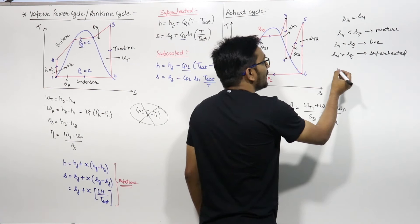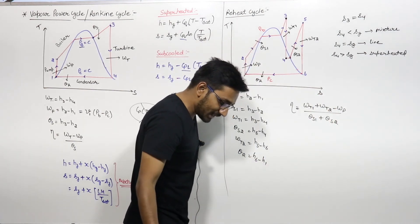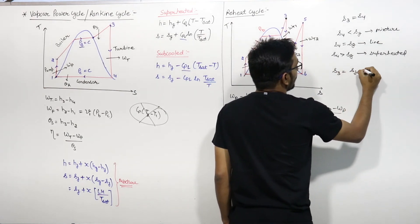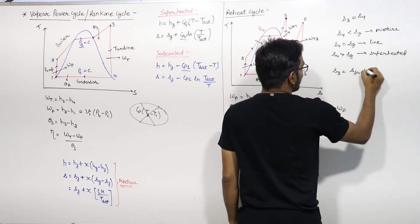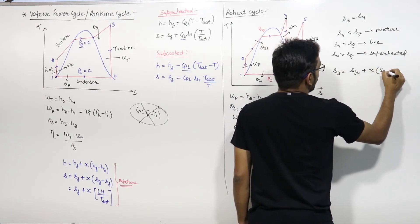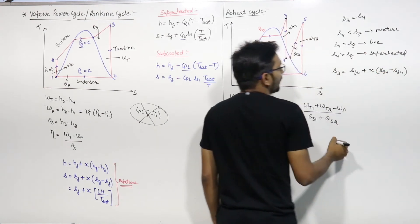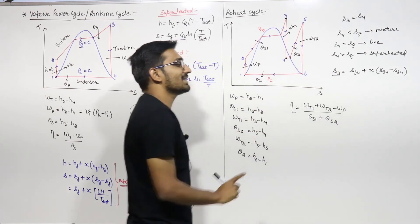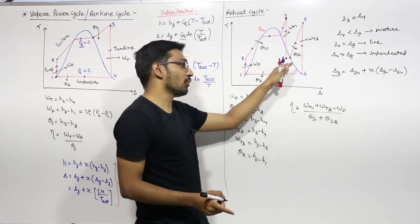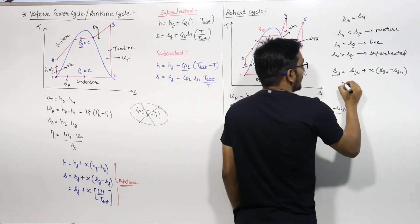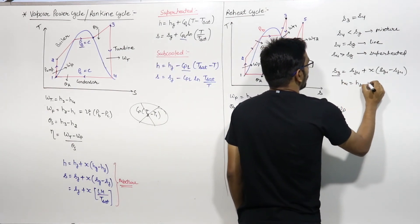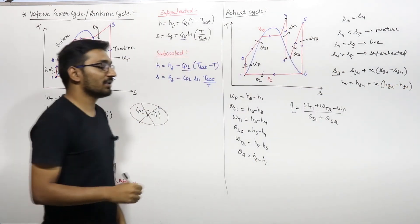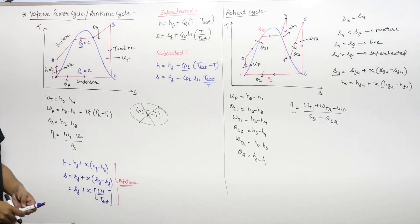S3 is equal to S4. If point 4 is in the mixture region, then you need to find the dryness fraction. So: S3 = S4 = SF4 plus X into (SG4 minus SF4). From that you find X, and then H4 = HF4 plus X into (HG4 minus HF4).